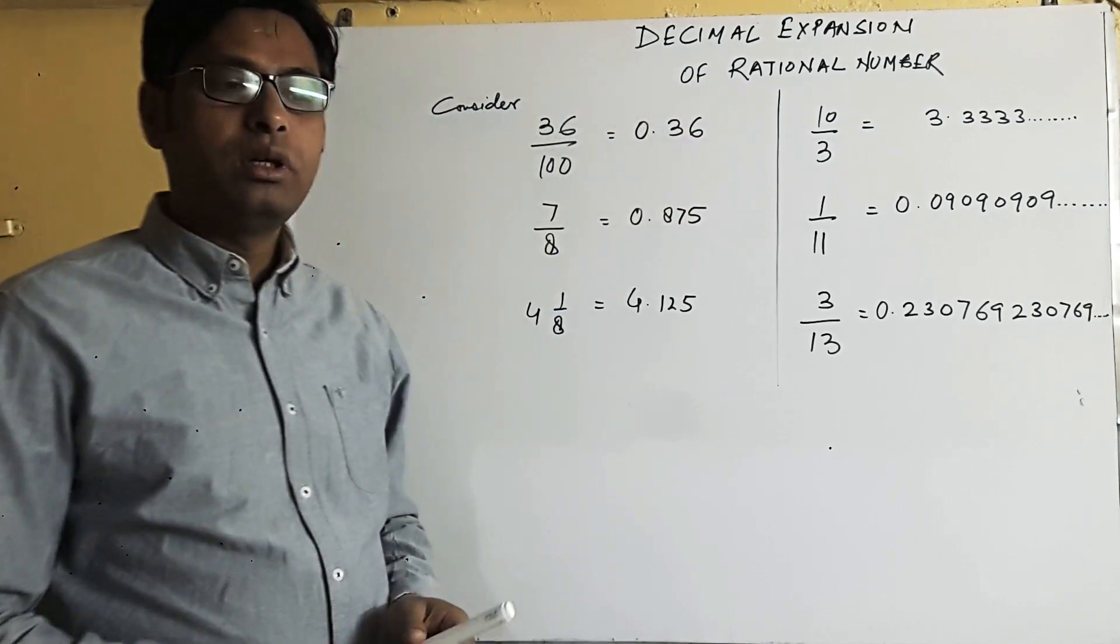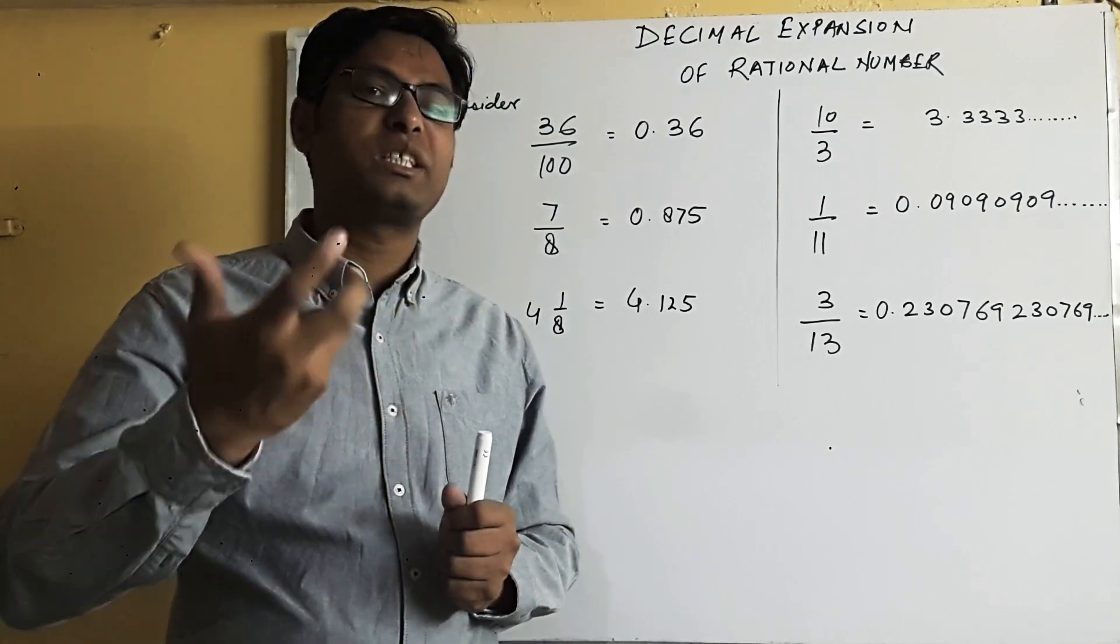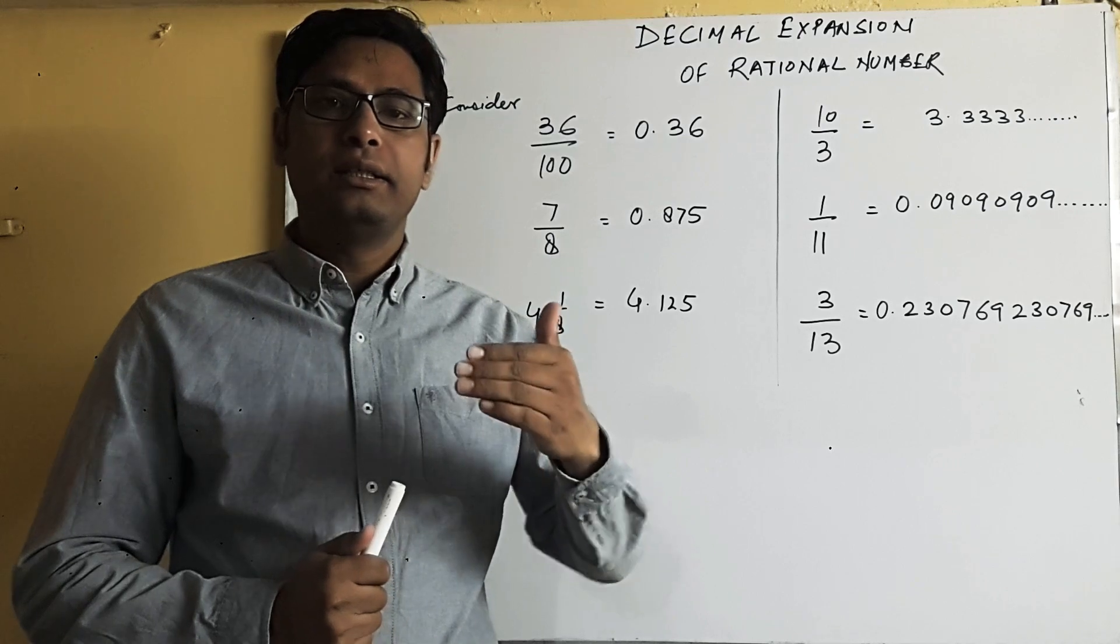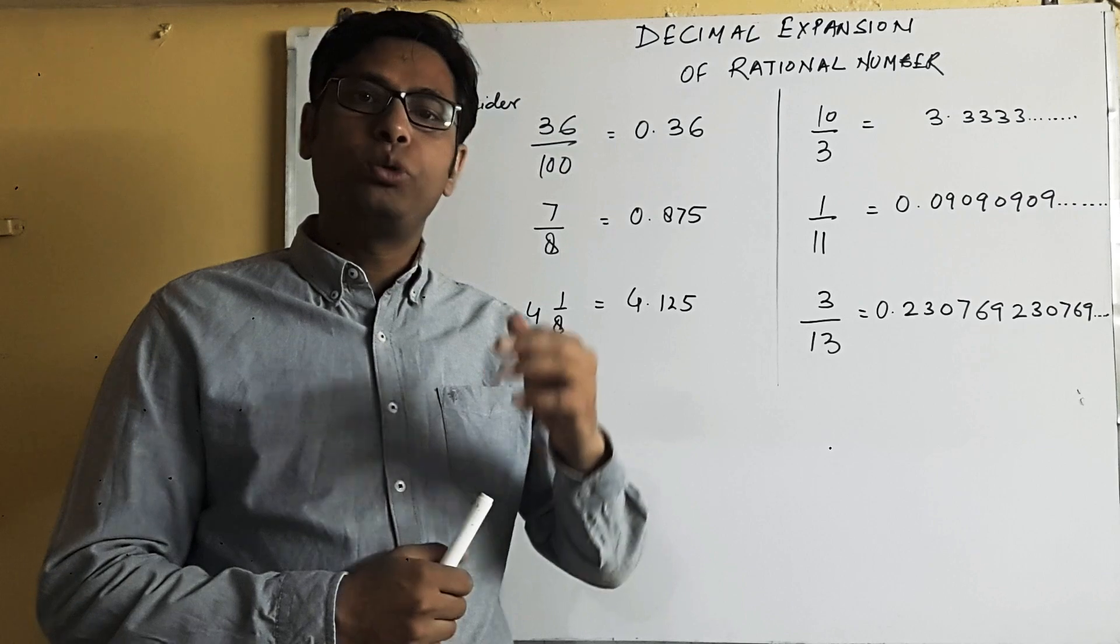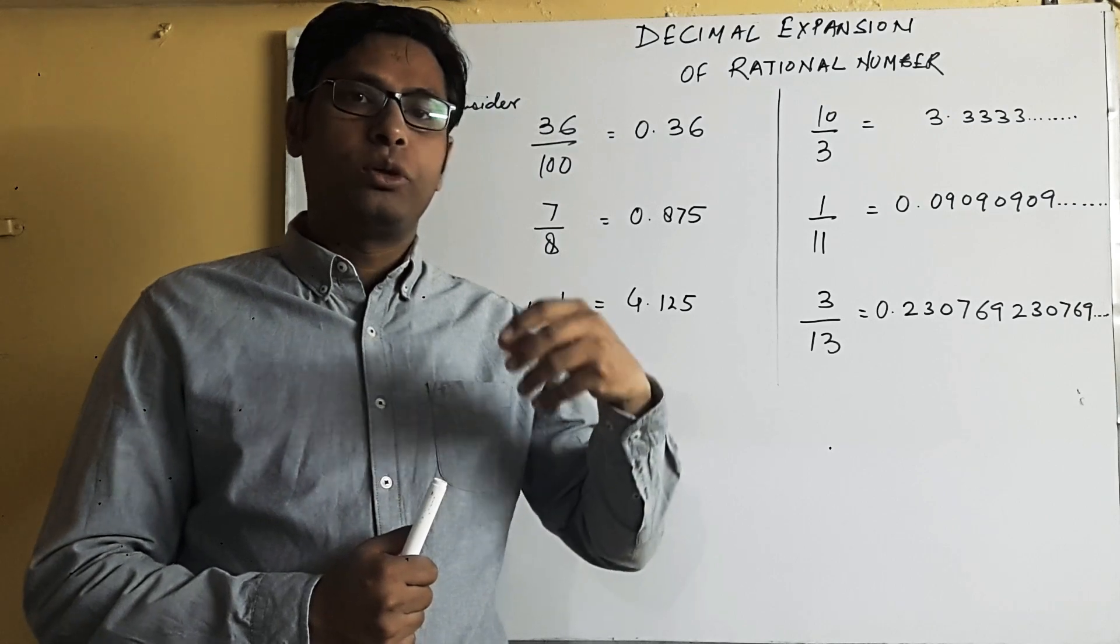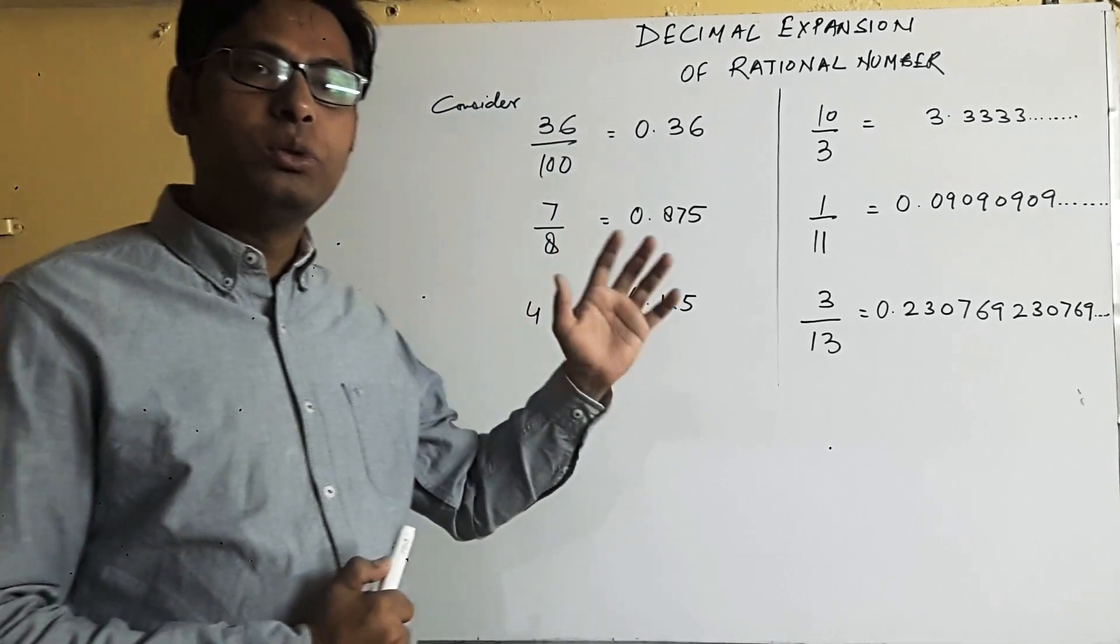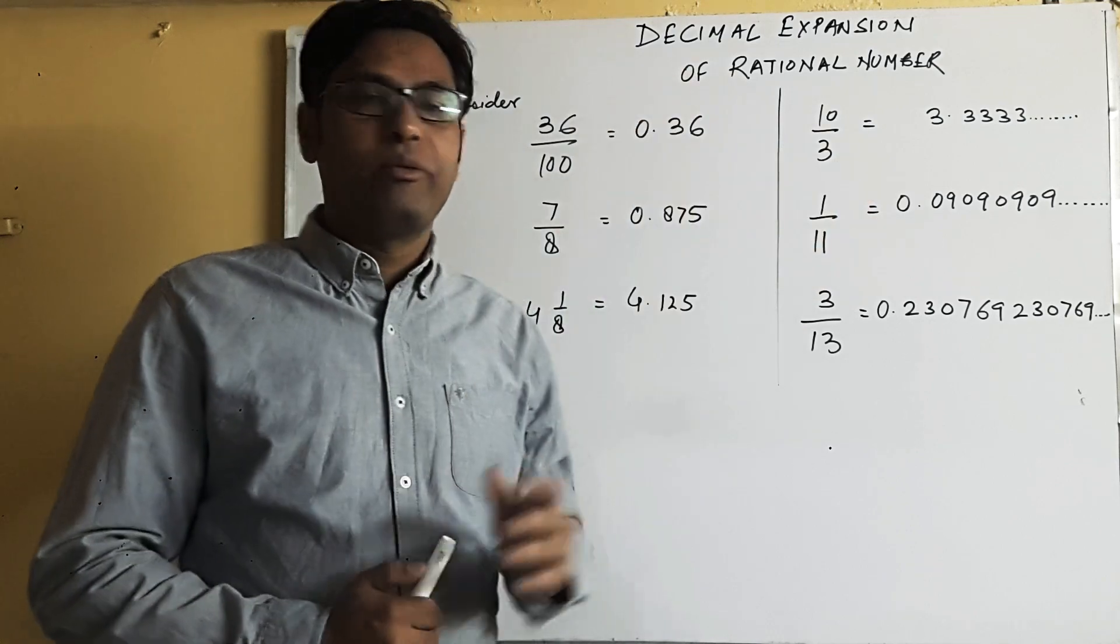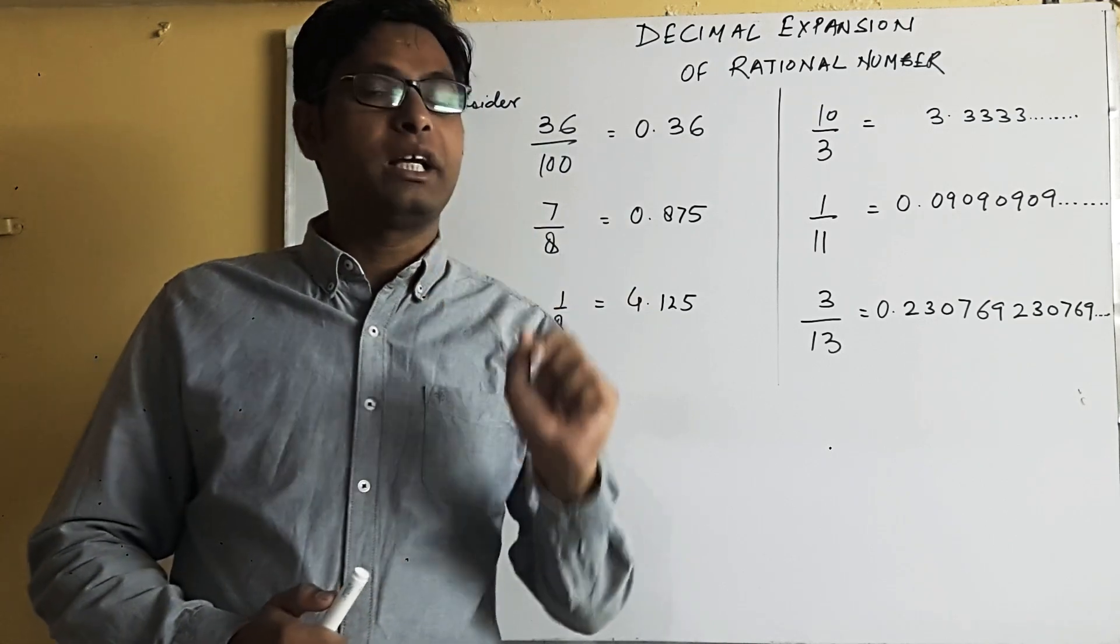Now how to convert a number which is in the form p upon q into decimal form? It's very simple, we divide the numerator by denominator and the answer comes in decimal form. This is the way to convert any rational number from p upon q to decimal. Now decimal expansions will give you some kind of numbers which will distinguish between two types of decimal expansions.